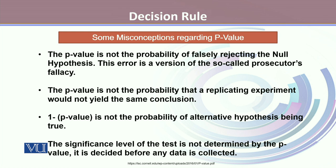Here are some misconceptions regarding the p-value. The p-value is not the probability of falsely rejecting the null hypothesis — this error is a version of the so-called prosecutor's fallacy. The p-value is not the probability that a replicating experiment would not yield the same conclusion, and 1 minus p-value is not the probability of the alternative hypothesis being true. The significance level of the test is not determined by the p-value; it is decided before any data is collected. If the p-value is less than or equal to the level of significance, we may reject the null hypothesis; otherwise, we fail to reject it and conclude that it is true.